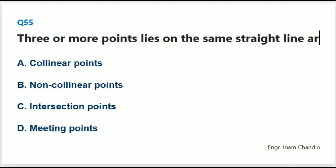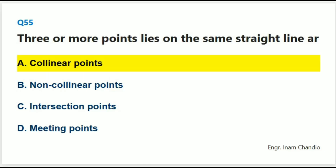Three or more points that lie on the same straight line are known as: The correct answer is A. Collinear points.